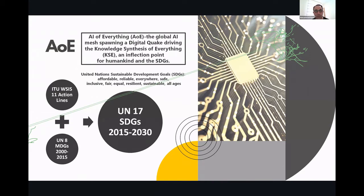We've seen governance approaches from 2000 to 2015 with 11 action levels at the global governance level, framed under ITU-WSIS, together with the UN MDGs. Now, from 2021 through 2030, we are talking about the United Nations' 17 SDGs — Sustainable Development Goals.